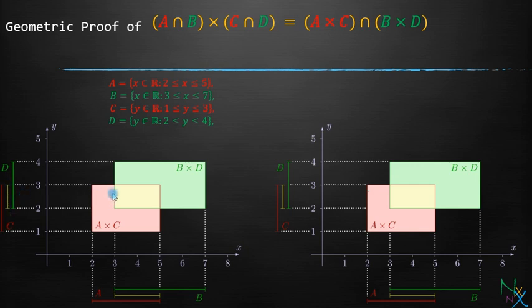Their cross product will be this entire yellow colored rectangle. Let us highlight this one.